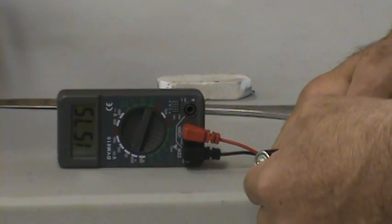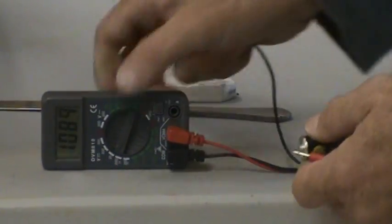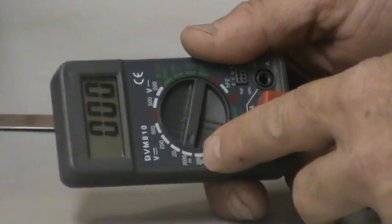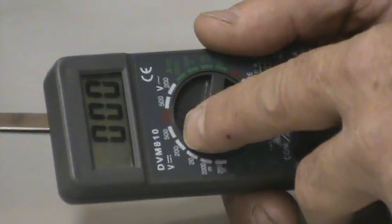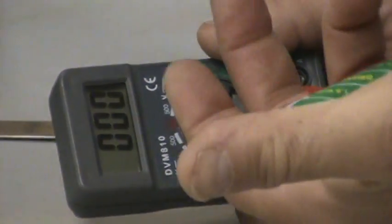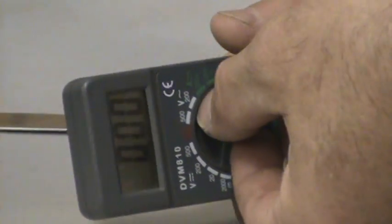If I switch the scale to 2,000 millivolts, now it's going to be measuring in millivolts. So instead of 1.5 something, it's going to measure 1,579 millivolts, which is the same thing as 1.579 volts. The way these multimeters work, if there's an M there for millivolts, it's measuring in millivolts. If there isn't, it's measuring in volts.